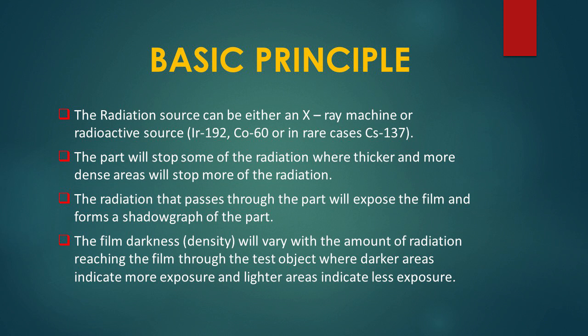Areas of the object where thickness has been changed by discontinuities such as porosity or cracks will appear as dark outlines on the film. Inclusions of low density, such as slag, will appear as dark areas, while inclusions of high density, such as tungsten, will appear as light areas. All discontinuities are detected by viewing the shape and variation in density of the processed film.